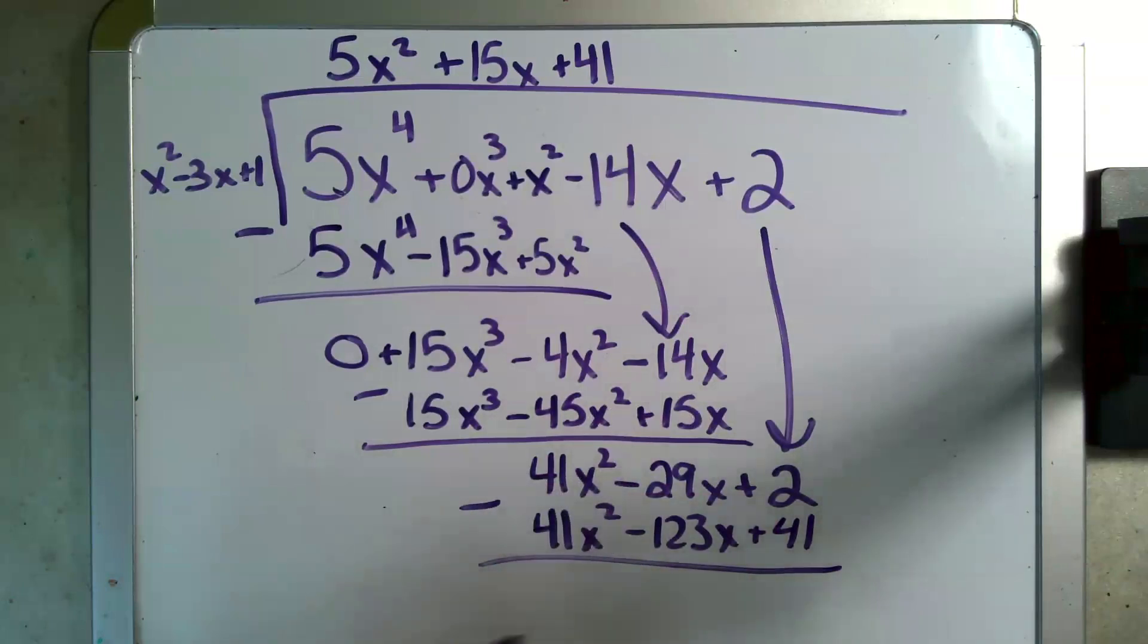41x squared minus 41x squared, there's that zero. Negative 29x minus minus or plus 123x is 94x. And 2 minus 41 is minus 39.